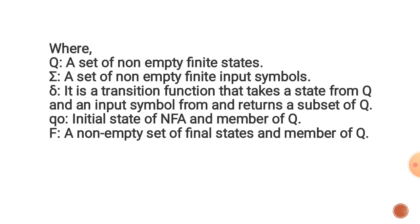Q is a non-empty finite set of states. Σ is a non-empty finite set of input symbols. Delta (δ) is a transition function that takes a state from Q and an input symbol and returns a subset of Q. q0 is the initial state of NFA and is a member of Q, and F is a non-empty set of final states and a member of Q.